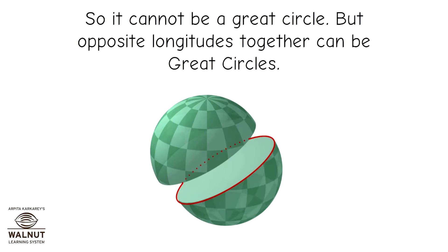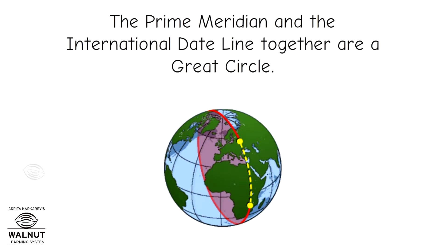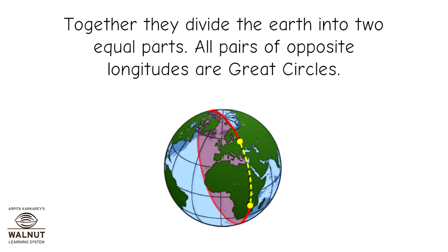But opposite longitudes together can be great circles. The prime meridian and the international dateline together are a great circle. Together they divide the earth into two equal parts. All pairs of opposite longitudes are great circles.